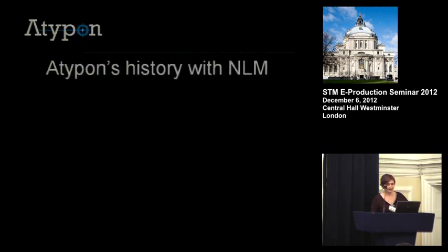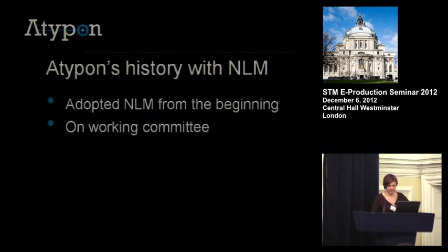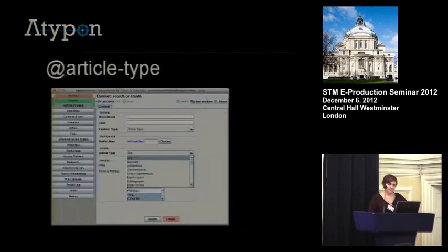Just to speak briefly about Adipon's history within NLM: we adopted it from the very beginning. We have a member of the staff on the working committee, and a lot of the modifications we made to the 2.0 DTD we used got brought into the 3.0 DTD. The standard is really built into our platform — we require it as a submission format. We use archiving and interchange for a variety of reasons, and there are other parts of our platform that incorporate the standard, for instance, access control based on article type using the canonical list of article types in the JATS standard.